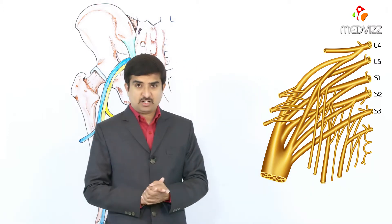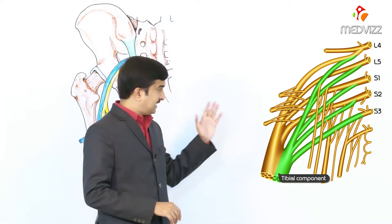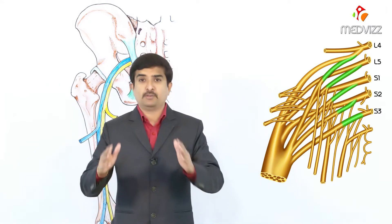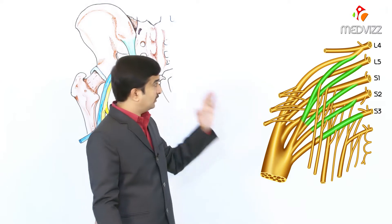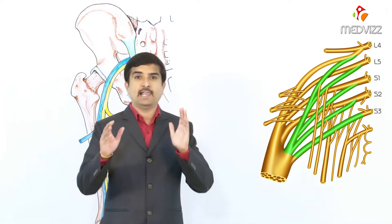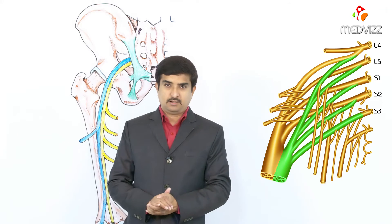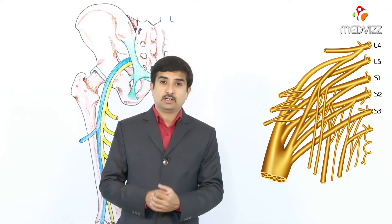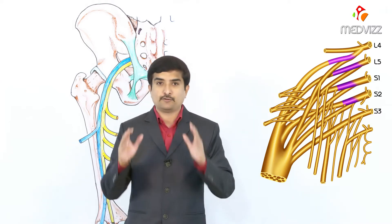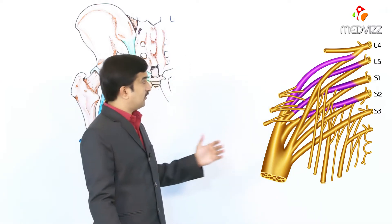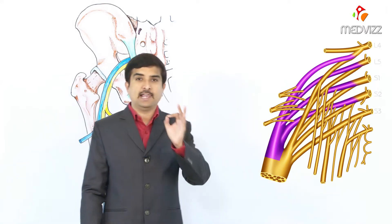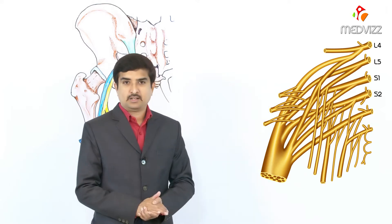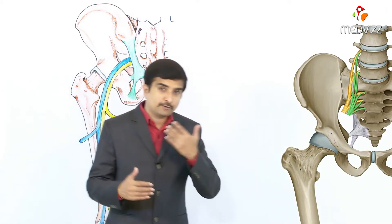The sciatic nerve has two components: a tibial component and a peroneal component. The tibial component is formed from the ventral divisions of the ventral rami of L4 to S3 spinal nerves. The common peroneal component of the sciatic nerve is formed from the dorsal divisions of the ventral rami of L4 to S2.